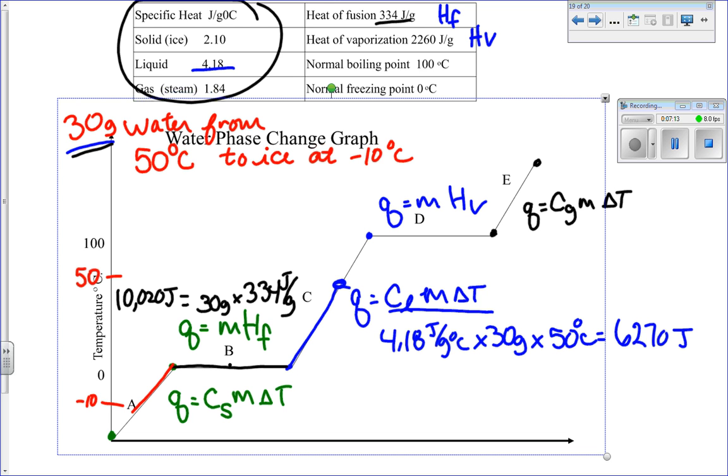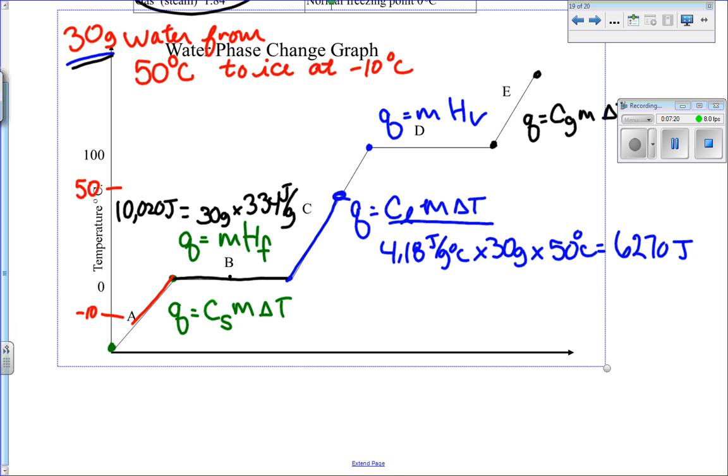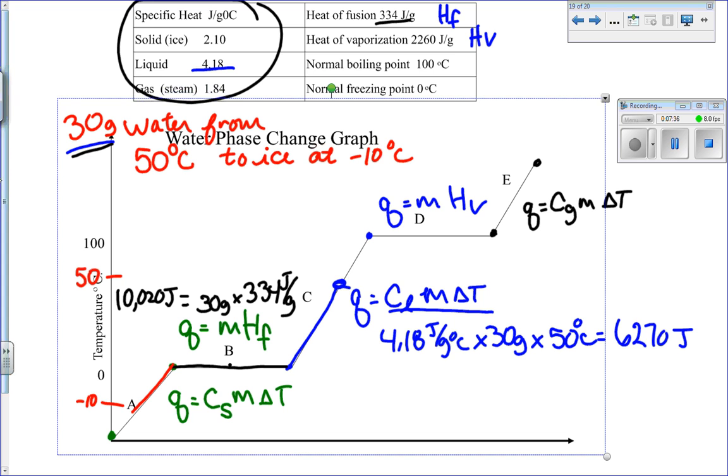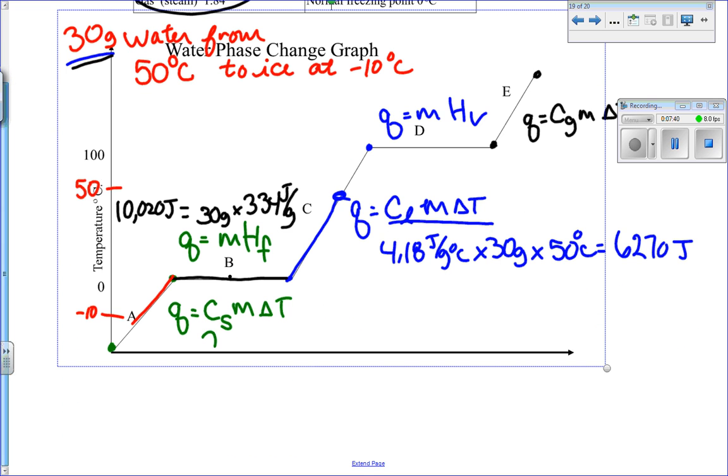And so I'm going to plug in the information down here for the solid now. Because at this point, I've taken my water and I've cooled it down to zero. Now I've frozen it. Now it's solid ice, but it's still at zero degrees. So I want to cool it now a little bit more to negative 10. So I look up here and I see that the solid number is 2.1. So I'm going to plug that in. 2.1.